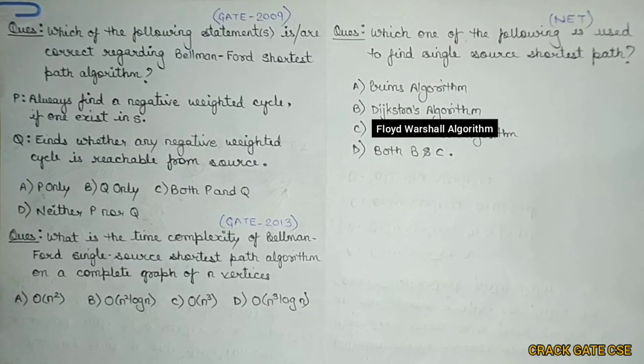Hello friends, welcome to CrackGate CSE and in this series of Algorithm, today we will be discussing some previous GATE questions on Bellman-Ford Algorithm, which is used to find out the single source shortest path. It can find the single source shortest path even if there is any negative edge cycle.